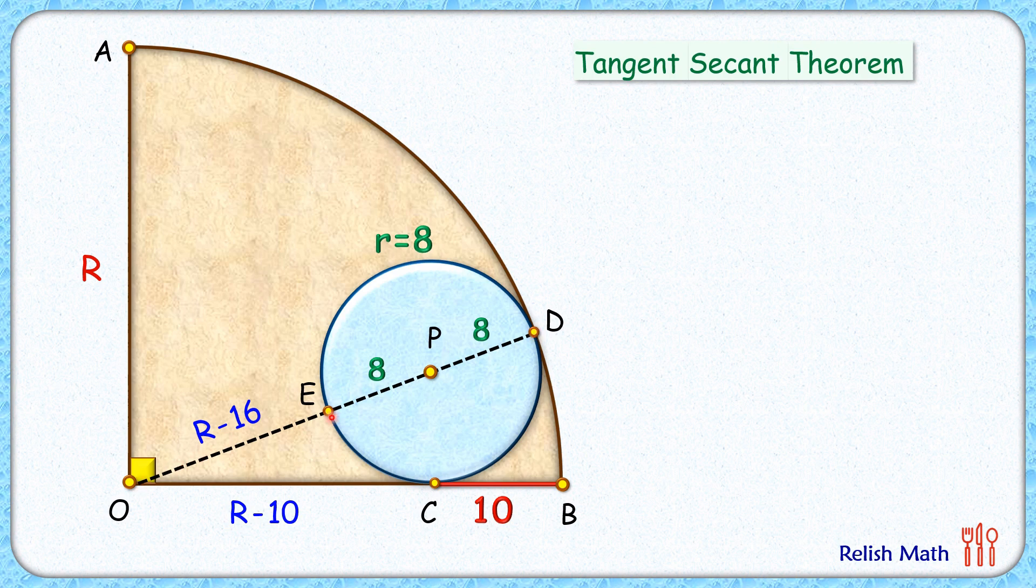...we get OE times OD equals OC squared. Putting the values here: OE is R minus 16, OD is R, and OC is R minus 10.